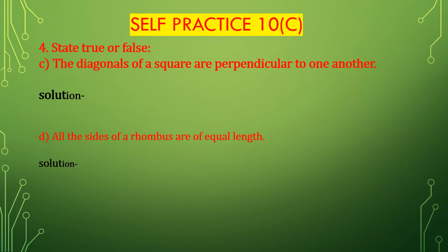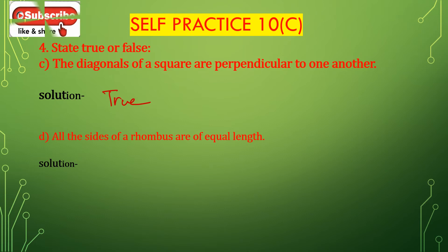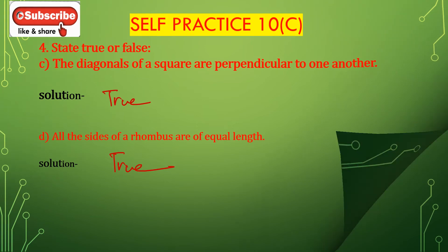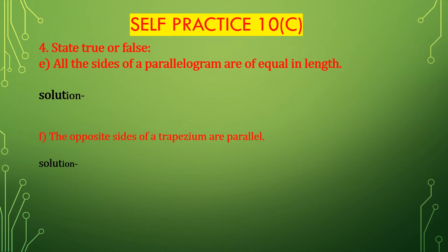Now bit C: the diagonals of a square are perpendicular to one another. This is true. Bit D: all the sides of a rhombus are of equal length. This is also true. Bit E: all the sides of a parallelogram are of equal length. All sides are not equal — only opposite sides are equal. So this is false.